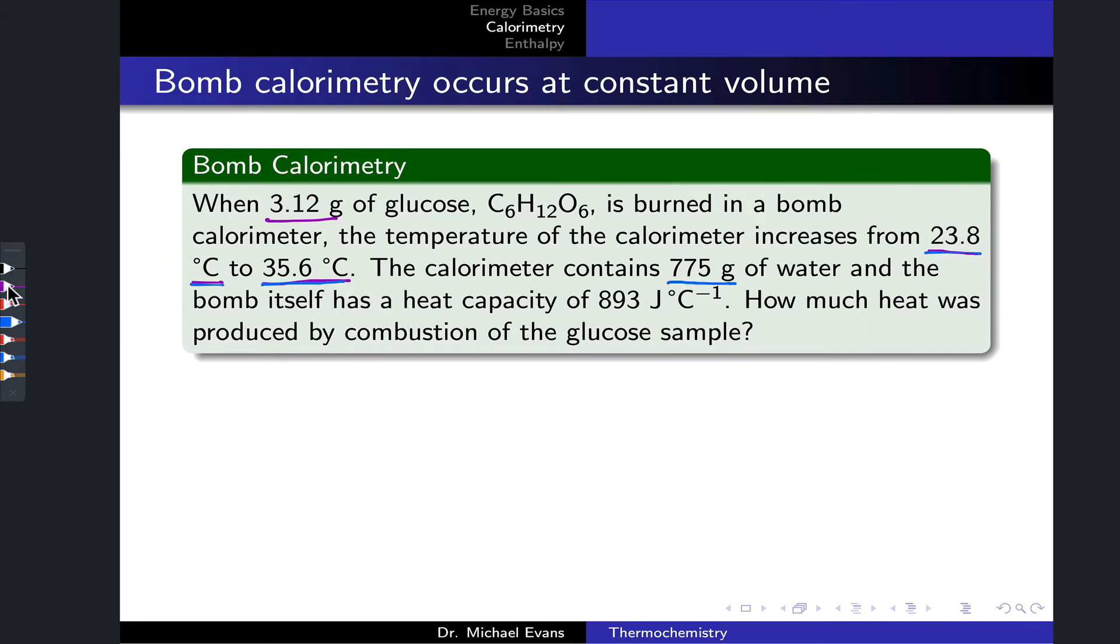We also need the heat capacity of the bomb itself, since that Q_cal term is going to need this heat capacity, 893 joules per degree Celsius. The question is essentially, what is Q_reaction? How much heat was produced by the combustion of this glucose sample?